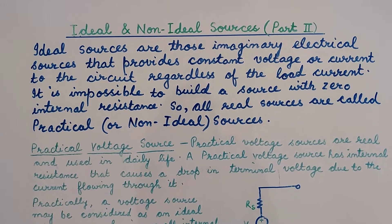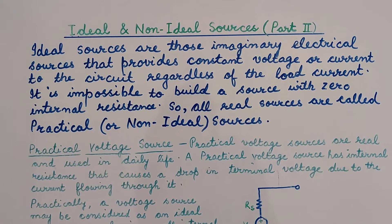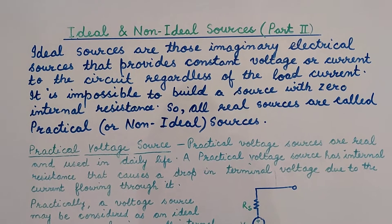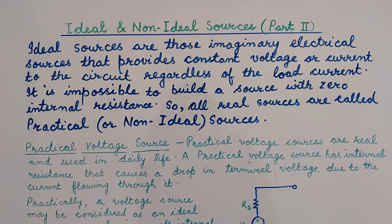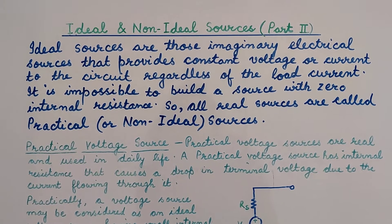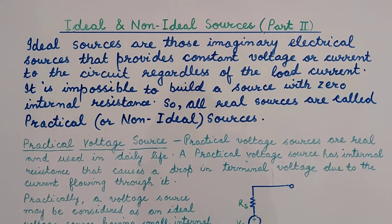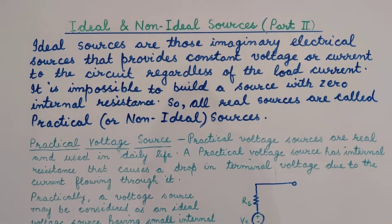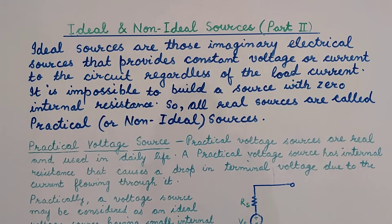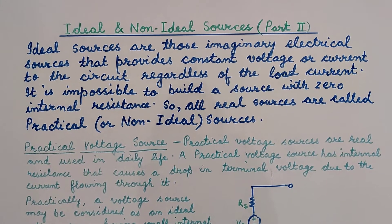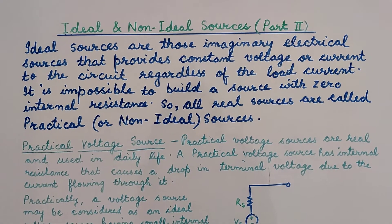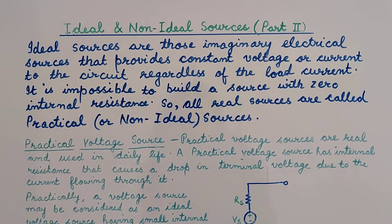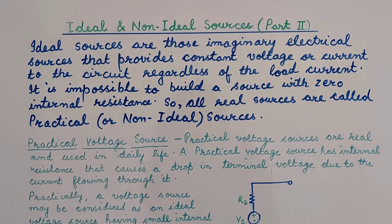In today's lecture, we will be discussing the ideal and the non-ideal sources. The ideal sources are those imaginary electrical sources that provide constant voltage or current to the circuit irrespective of the value of the load current. It is not possible to build a source having zero internal resistance, so all the real sources are called the practical or the non-ideal sources.